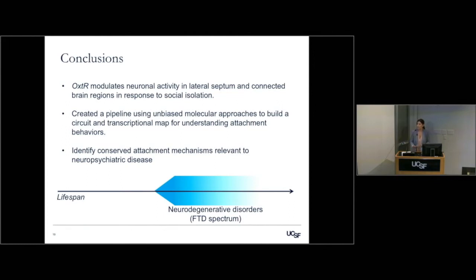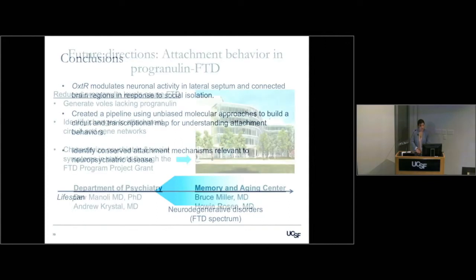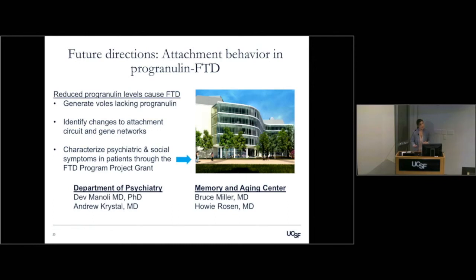Ultimately, we want to identify conserved attachment mechanisms that are relevant to neuropsychiatric disease. My interest has always been in the geriatric population and diseases of aging. FTD in particular has disrupted attachments as its hallmark. Progranulin acts in ways we don't quite understand, but it accounts for as much as 10% of patients with both sporadic and familial forms of frontotemporal lobe dementia.